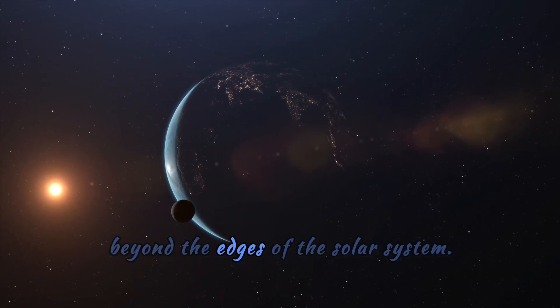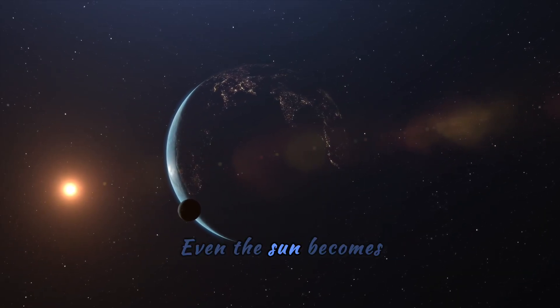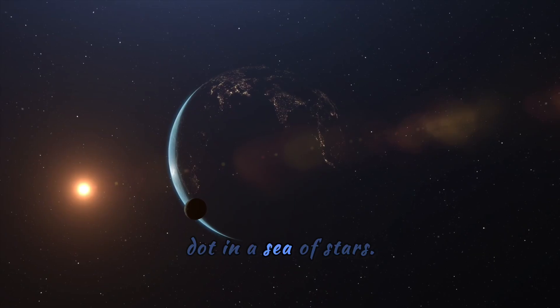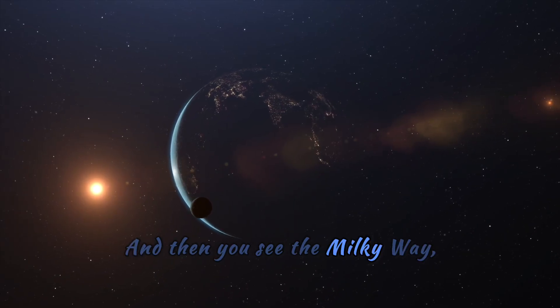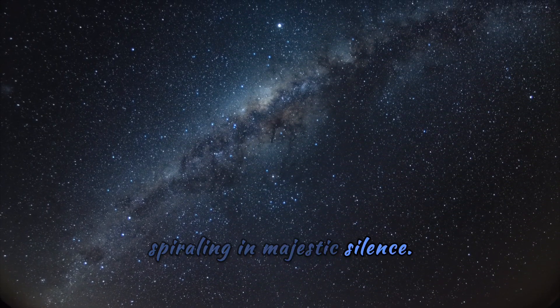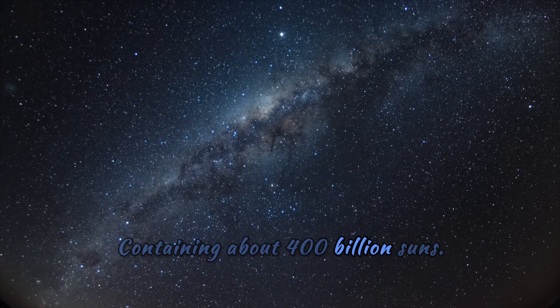Keep going. From beyond the edges of the solar system, even the sun becomes just another bright dot in a sea of stars. And then you see the Milky Way, our galaxy, spiraling in majestic silence, containing about 400 billion suns.